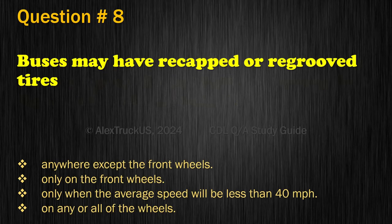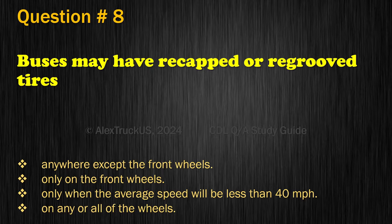Question 8. Buses may have recapped or re-grooved tires: Anywhere except the front wheels; Only on the front wheels; Only when the average speed will be less than 40 miles per hour; or On any or all of the wheels. The correct answer is: Anywhere except the front wheels.